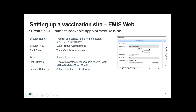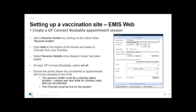In the session category, select the default non-list category. Then add a session holder using the ribbon. Add a clinician from within your practice — you can use a dummy clinician if you want, but make sure they're set up with the GP Connect role in the staff details section. Confirm the session holder has been added in the session details.